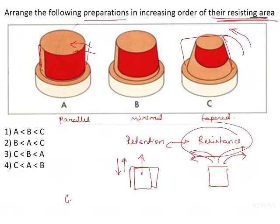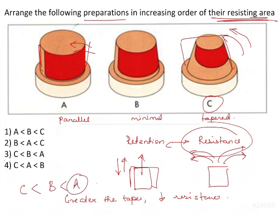So greater the taper, lesser is the resistance. So of the three images, C will have the greatest taper and the least resistance. So C has least resistance compared to B and then A. A has the greatest resistance. So which option is this? That is option number 3.